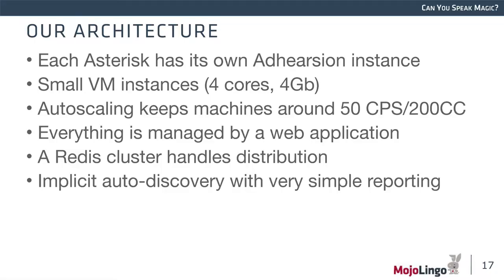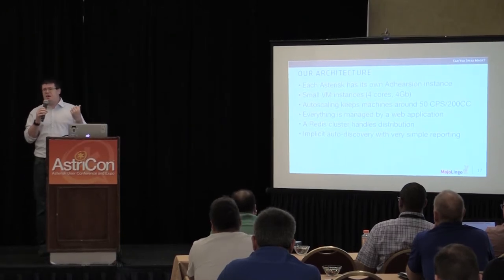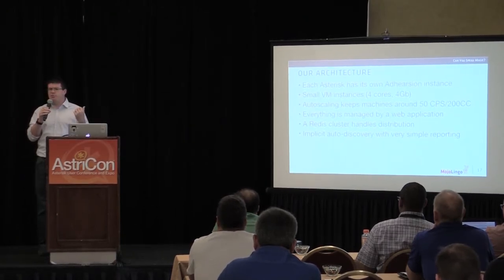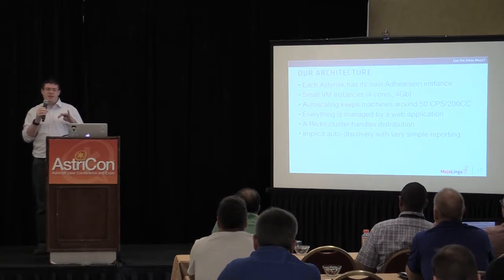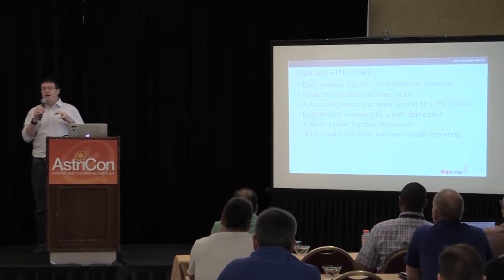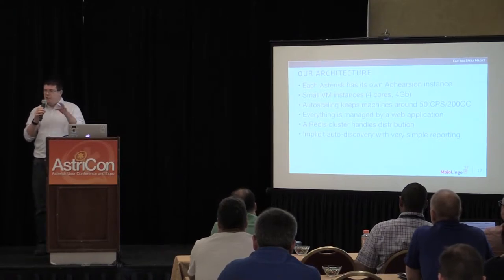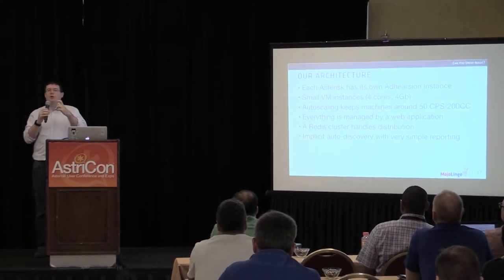What do we end up with? Each Asterisk runs one-to-one with an Adhearsion process, which manages picking up calls from a Redis queue, getting the audio files for that call, dialing the call to the user, and reporting call state (ringing, etc.). We're using small DigitalOcean $20–$40 instances of 4 cores and 4 GB each. We keep calls slightly above ideal numbers to contain costs and avoid overly aggressive autoscaling.